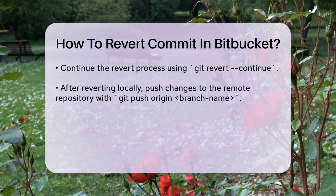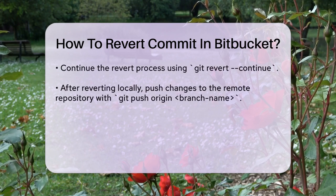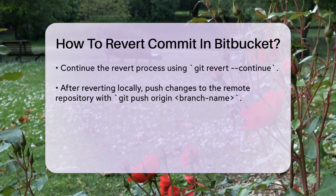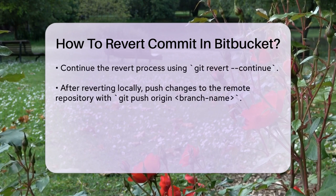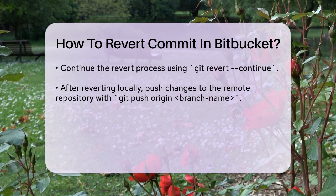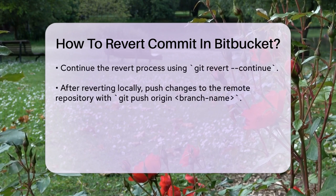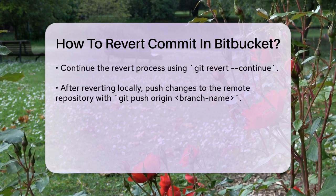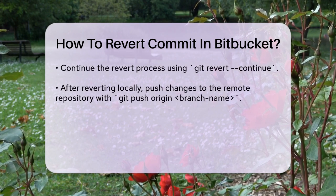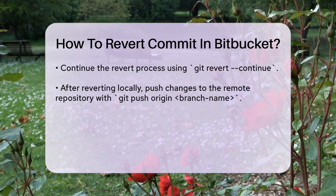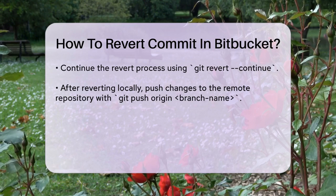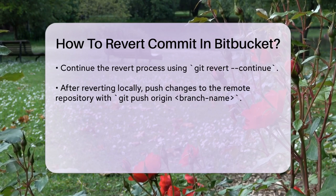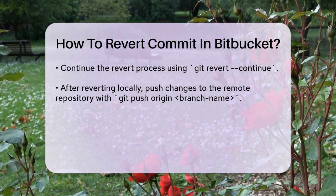After successfully reverting the commit locally, you need to push the changes to your remote repository on Bitbucket. Use the following command: git push origin <branch-name>, replacing branch-name with the name of the branch you're working on, such as master or main. It's important to communicate with your team before reverting commits, especially in shared repositories, to avoid any confusion or synchronization issues.